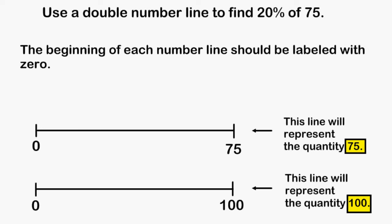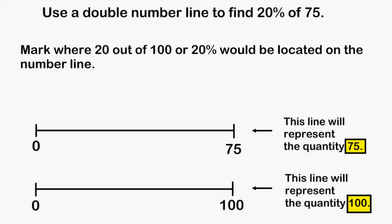The next thing that we must do is write 0 at the beginning of each of our number lines. 20% is given information in our problem so we must figure out where 20% would be located on our number line.